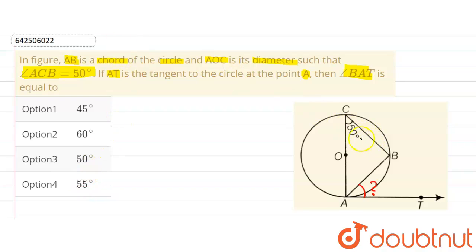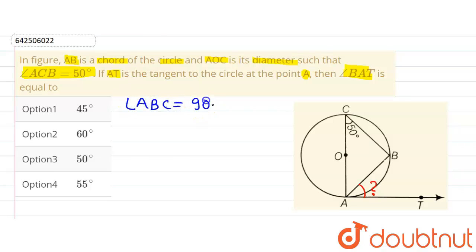If we consider triangle BAC, then angle ABC is actually the angle in a semicircle because AOC is the diameter. Therefore, angle ABC will be equal to 90 degrees, because the angle in a semicircle is 90 degrees.